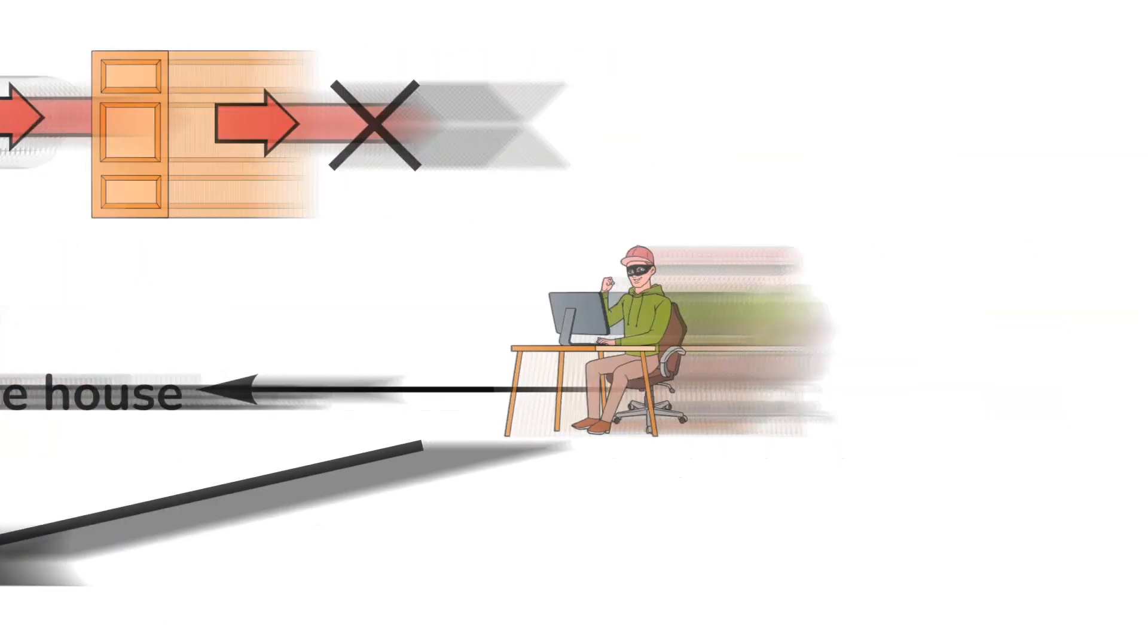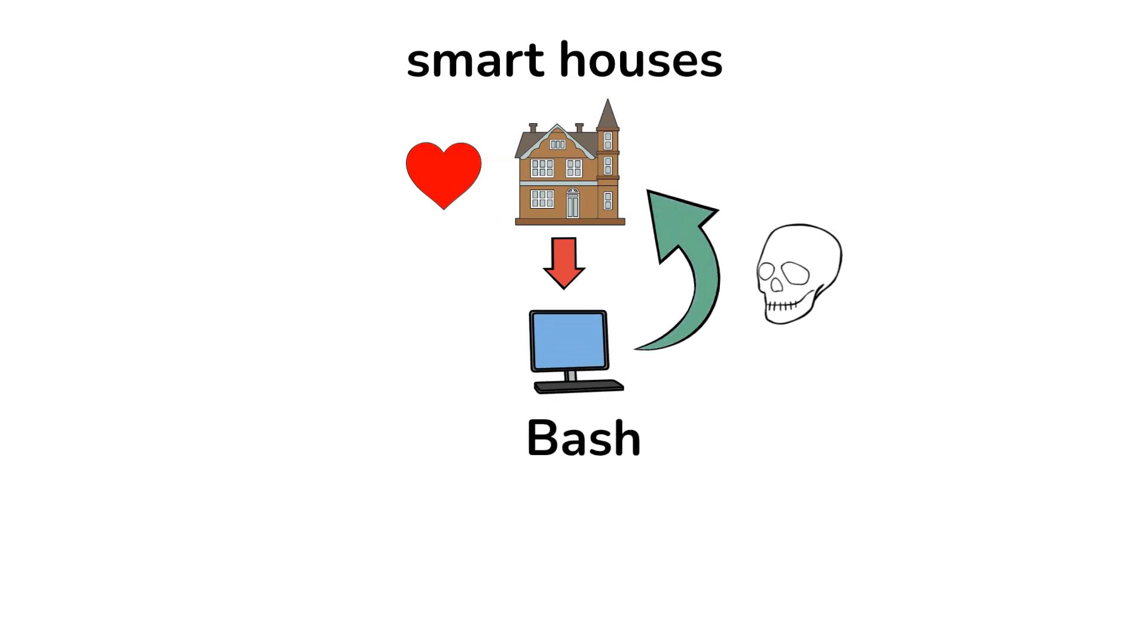Now, because people liked this type of smart houses, aka the computers that run bash, this meant that a lot of houses were not safe when this bug was discovered because many people owned this type of houses.